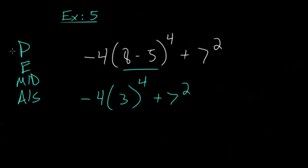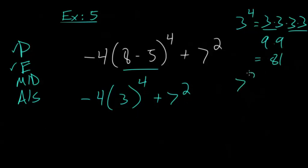We're going to raise that to the fourth power and then add that to 7 squared. The next step, we did parentheses. Now we do exponents. So we have 3 to the fourth, which is just 3 times 3 times 3 times 3. This is 9, that's 9, 9 times 9 gives us 81. And 7 squared, we know it's just 7 times 7, which is 49.